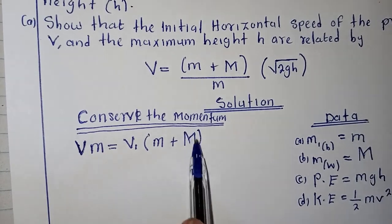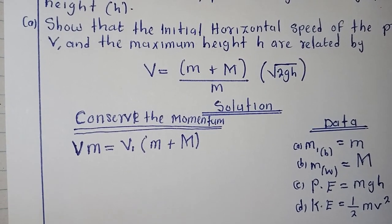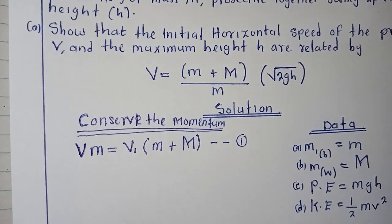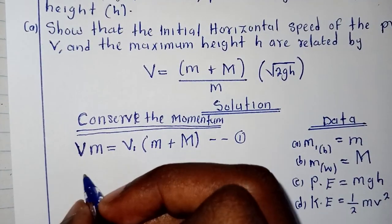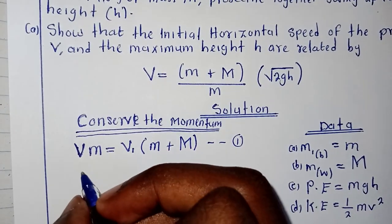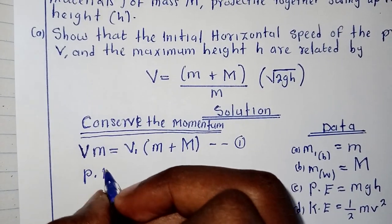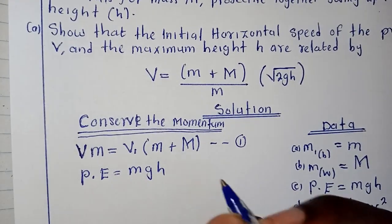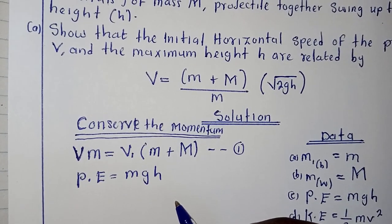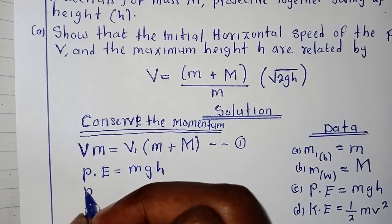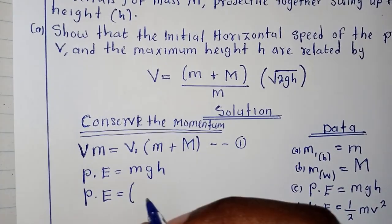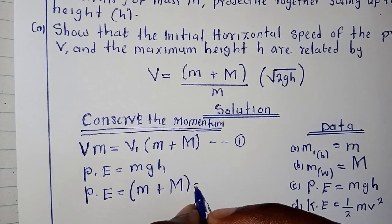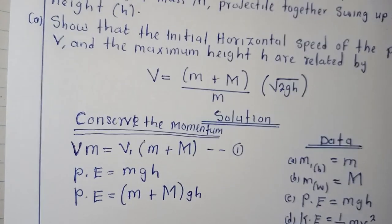In the first place where the bullet hits into the wooden material, we double the mass. We can name this one as equation 1. But we know that it's moving against gravity, so of course potential energy. Potential energy is given by mgh, and because the mass was doubled, potential energy this time around is going to equal m plus M times gh.